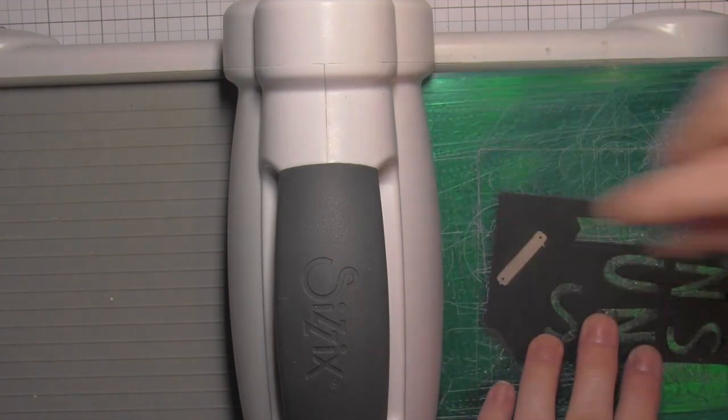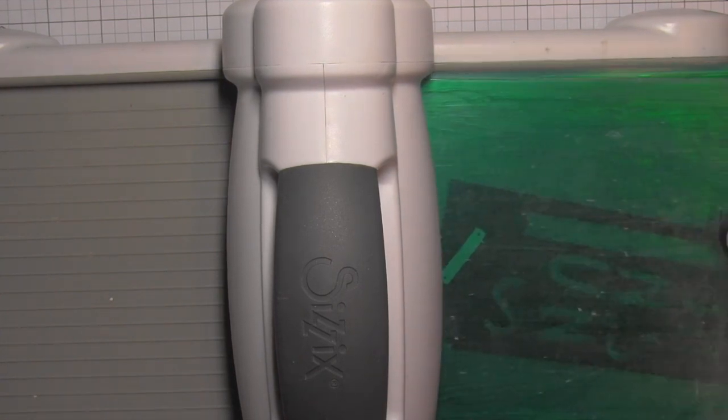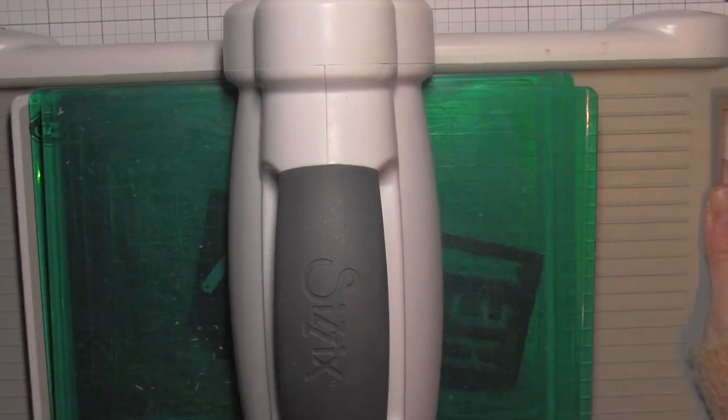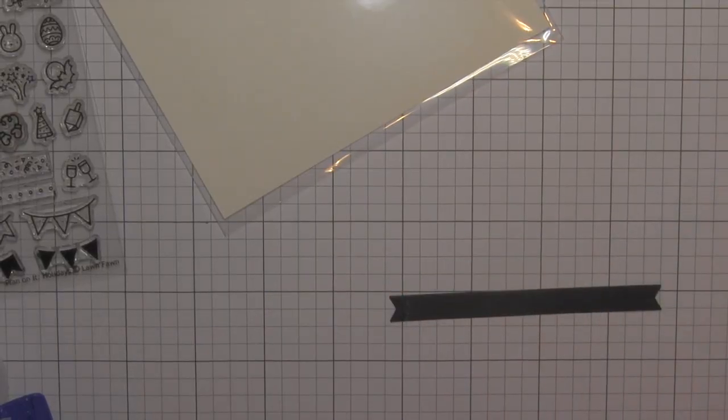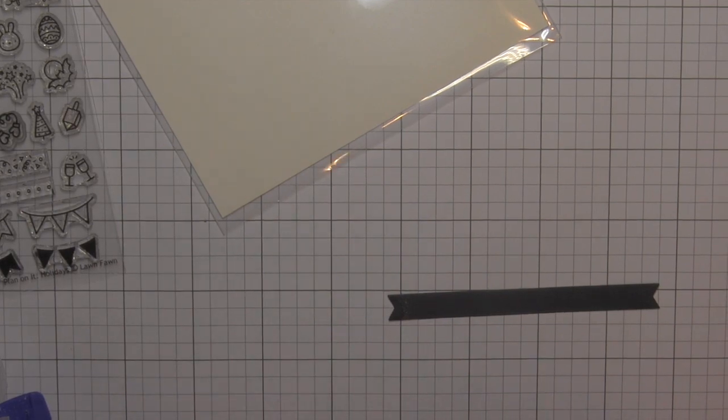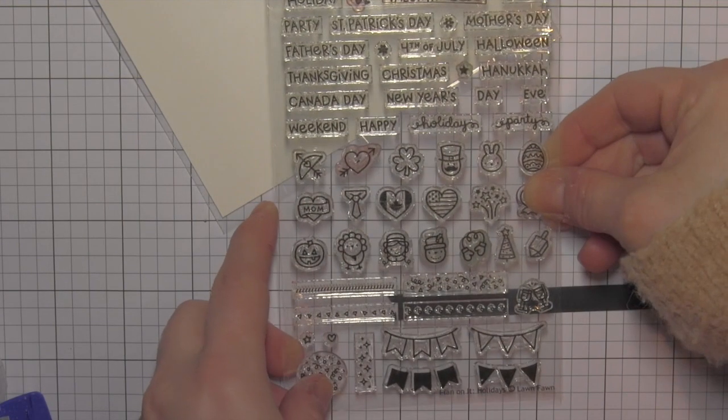It helps make your title really pop off the page. Not only am I going to die cut my title, the word sunshine, from black cardstock but I'm going to die cut it from scraps of lots of different Lawn Fawn cardstocks.